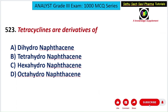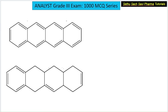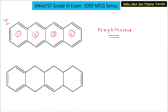Let us move on to the next question from medicinal chemistry. Tetracyclines are derivatives of: dihydronaphthacene, tetrahydronaphthacene, hexahydronaphthacene, or octahydronaphthacene? Tetracycline is a broad-spectrum antibiotic; the main drug is doxycycline. Looking at the first structure, you can see four benzene rings fused together — this structure is called naphthacene (tetracene). In naphthacene, there are nine double bonds.